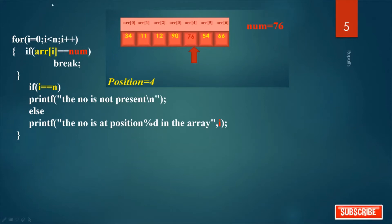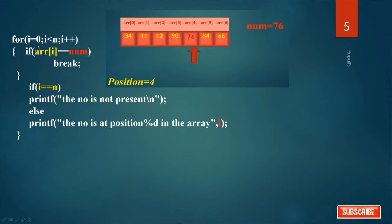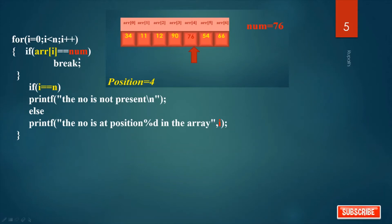Less than n means up to index 6. i starts from 0. 0 to 6 means 7 elements. So this loop will execute — sorry — this loop will execute 7 times because it is from 0 to less than n, that is less than 7, that is index 6. So 0 to 6 means 7 times. Now, if our desired element is num — I want to search num, num is 76 — if we get our desired element, then break.